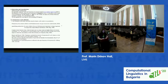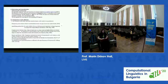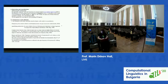Bauer and Aronoff propose a productivity measure: productivity P equals N1 divided by A, where N1 is the total number of hapaxes. The definitions follow: P is overall productivity, N1 is the number of hapaxes of the affix, and A is the total number of tokens of the affix in the corpus.